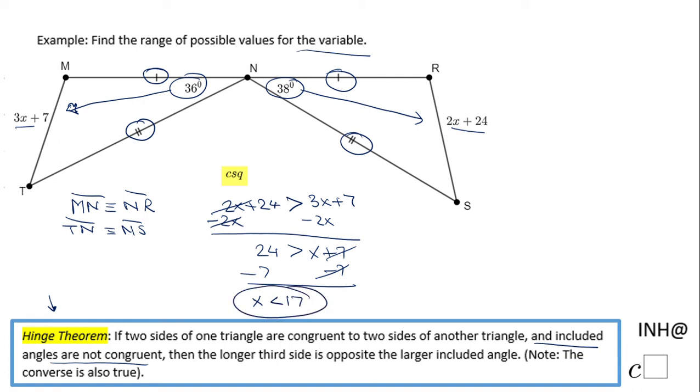So that is one thing we need to be aware of—x needs to be less than 17. That means this condition is accomplished; this angle is larger than 36°. But we have one more constraint.